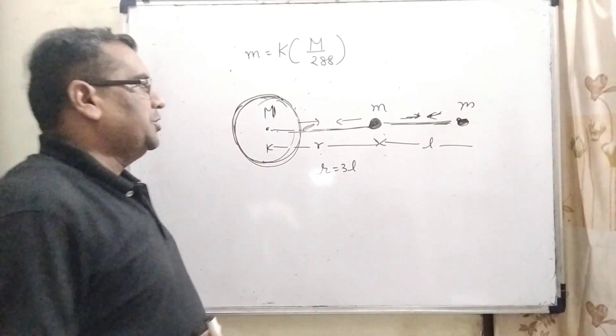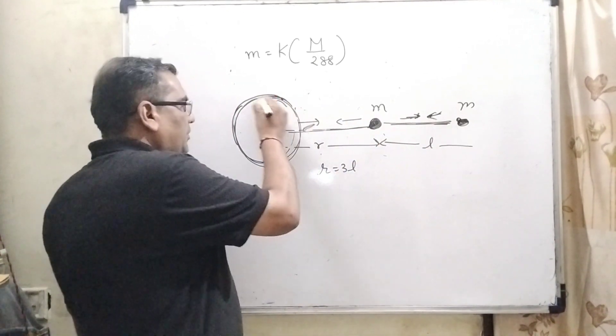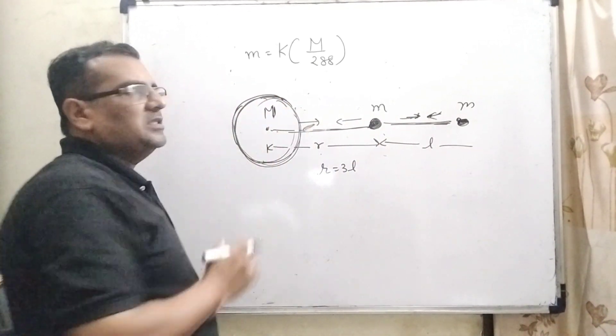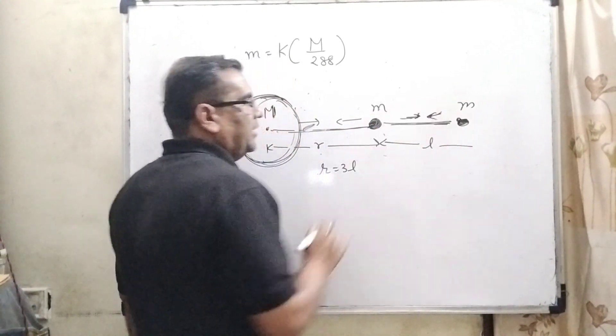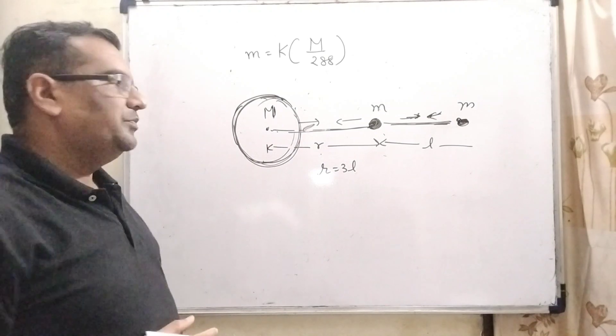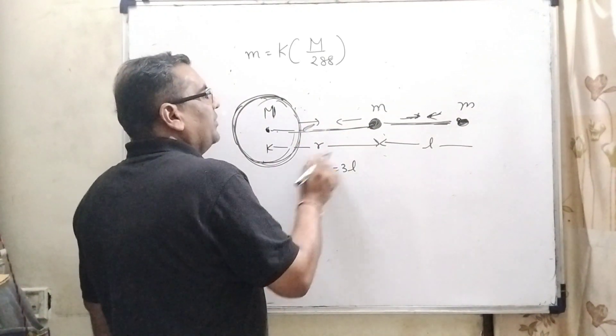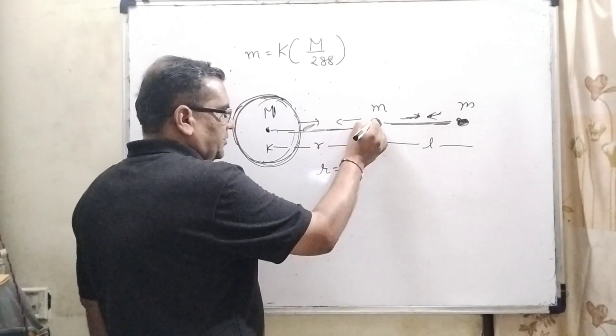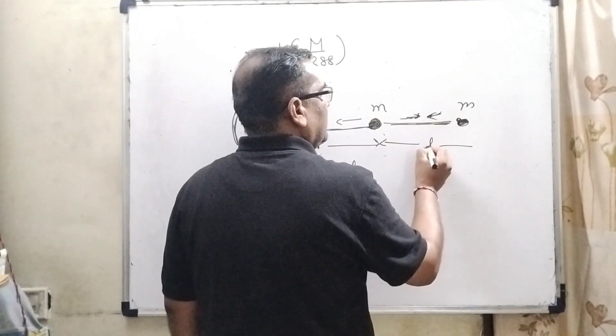Now let us think about this question. Here we have given three rigid bodies: the bigger body having mass capital M, and these are point objects having identical mass small m. The distance from the first rigid body to this point object is r equal to 3L, and for the second is L.